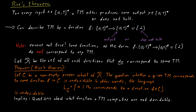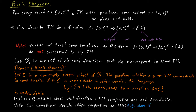It's important to know that Rice's Theorem does not say anything about other properties of Turing machines that have nothing to do with their output behavior. For example, if you ask whether a Turing machine runs for 10 steps and then stops on a particular input, that is decidable. This is not captured by Rice's Theorem because it talks about behavior that has nothing to do with the output behavior of the machine.